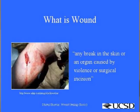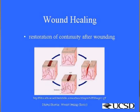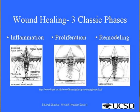So what is a wound? A wound is any break in the skin or an organ surface caused by violence or surgical incision, and wound healing is restoration of that continuity after wounding. Wound healing is usually described in three classic phases: inflammation, proliferation, and remodeling. The phase of inflammation is for cleaning up, proliferation is to fill the gap, and remodeling is to make it more functional and normal like the original tissue.